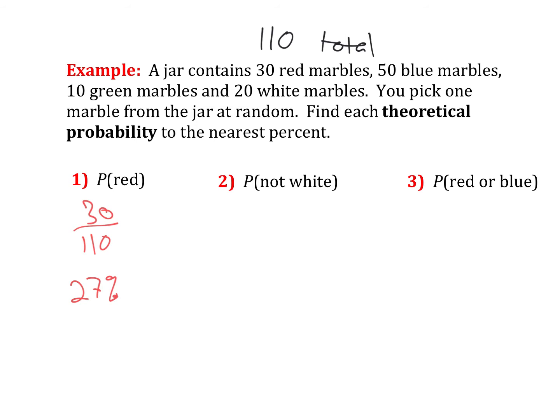The probability of not white, so all of them except for the white. I could go through and add 30 plus 50 plus 10. Or if I know there's 110 total, and I know 20 of those are white marbles, I could just say, okay, well, 110 minus the 20. That's going to give me 90 of them are not white. If 20 of them are, then the other 90 are not. So 90 over 110, and that would give me about 82%.